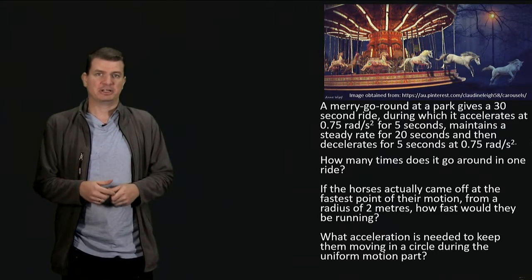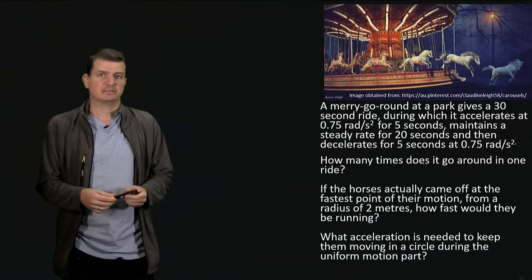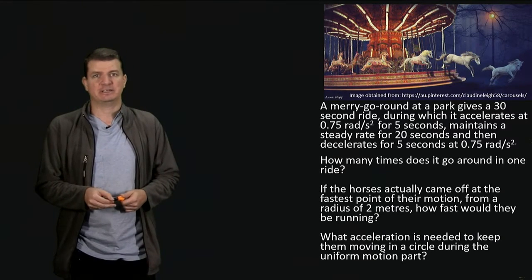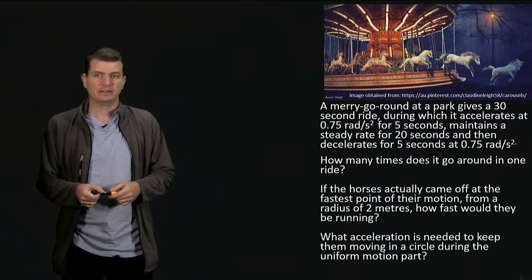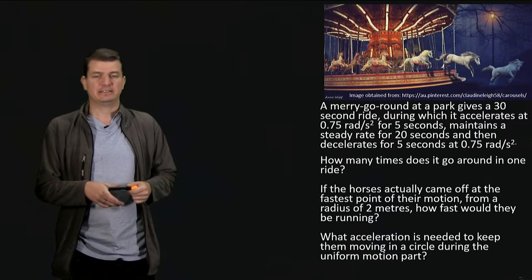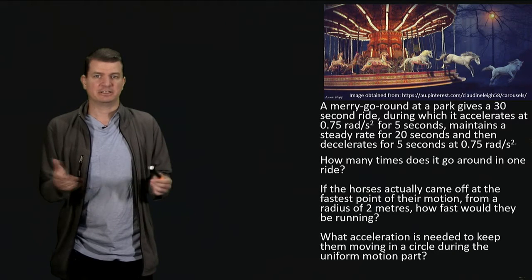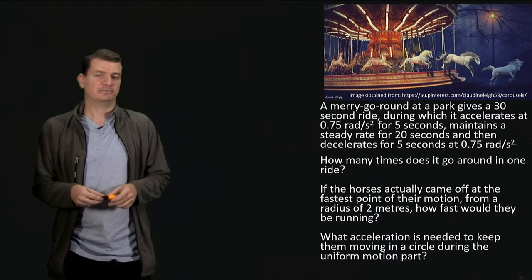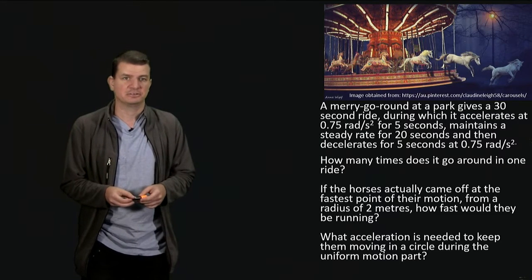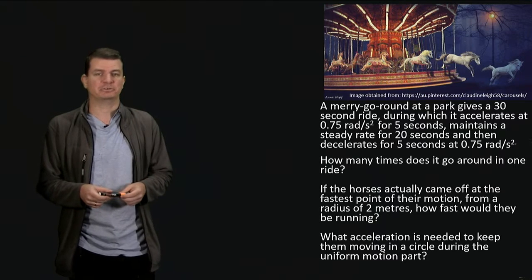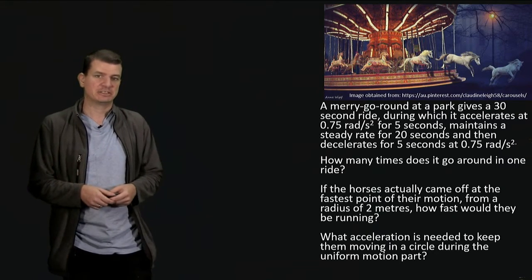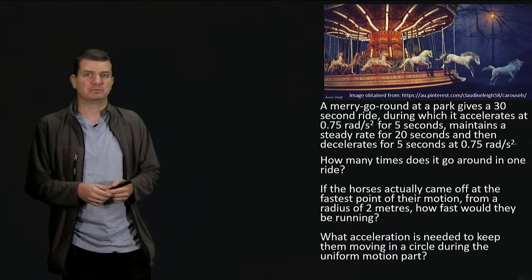We've got a carousel with a 30-second ride. The first five seconds consists of accelerating from rest at a constant rate of 0.75 radians per second squared. Then you enjoy a steady angular velocity for the next 20 seconds, and then decelerate in the last five seconds to come back to rest, using that same magnitude of 0.75 but with a minus sign. We're asked how many times around we go, and some other things we'll come back to.